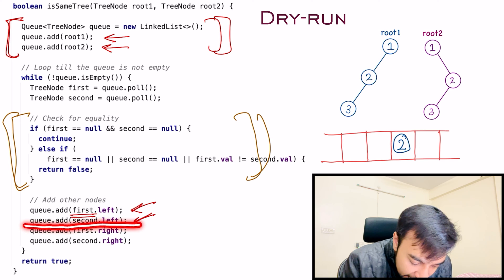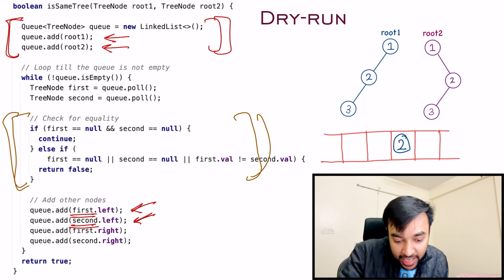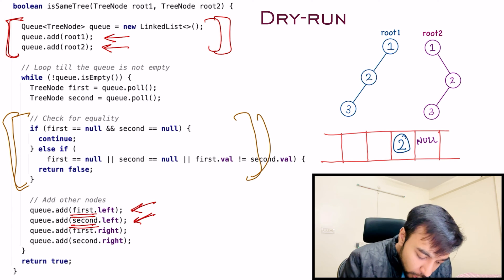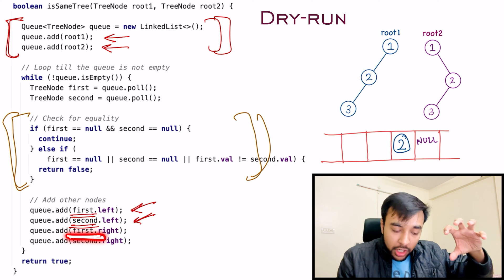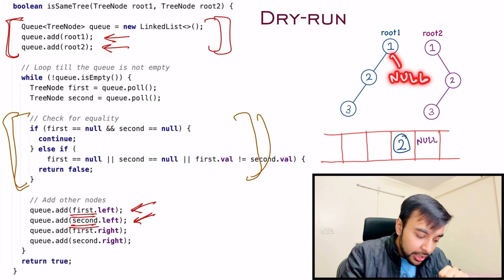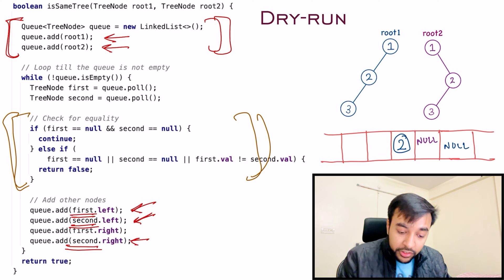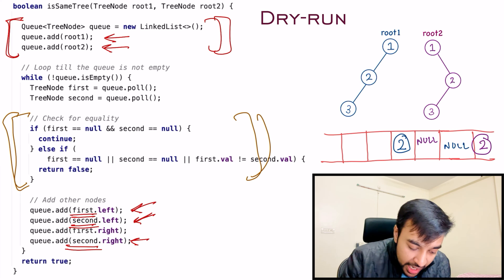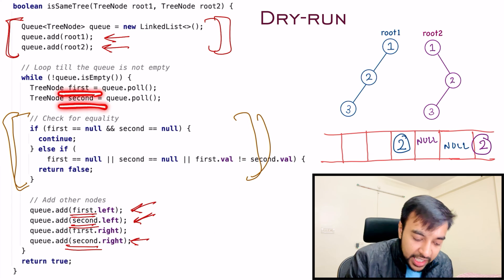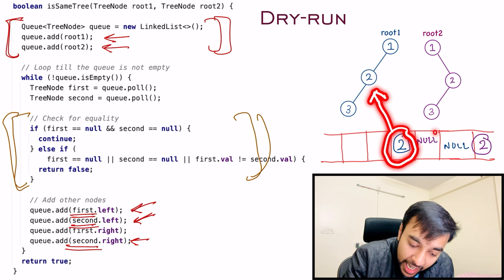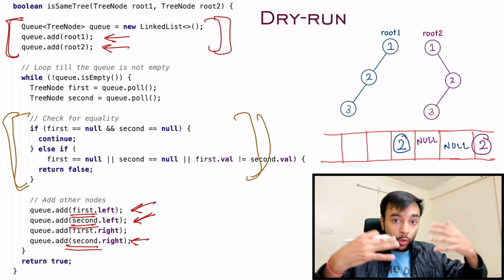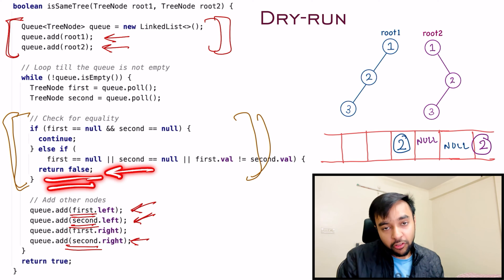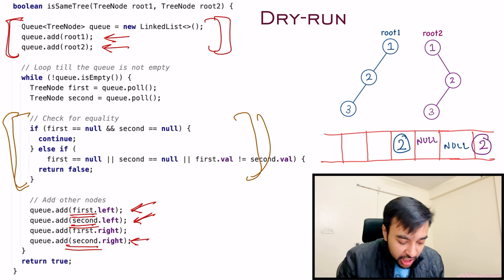If none of them are null, we arrive at the else condition and compare if the first value is not equal to the second value. If they are currently equal, the loop continues. Then we add the left node of the first tree and the left node of the second tree to the queue, followed by the right child of the first tree and the right child of the second tree. So the queue now has: 2 and null (left children), then null and 2 (right children). The loop runs again, pulling 2 and null — these are not equal, so we immediately return false.